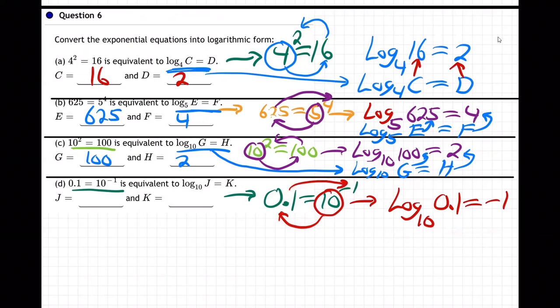We change the log. And then what form do they want us to compare to on this one? They told us to compare to this. So log base 10 of J equals K. So the J is the 0.1. K is the negative 1. J is 0.1. The K is the negative 1. And so there we go. That's how you change from exponential form to log form.